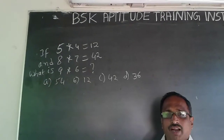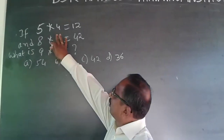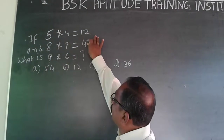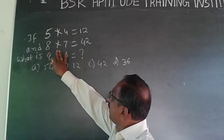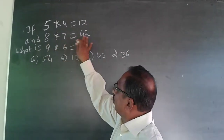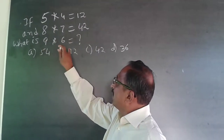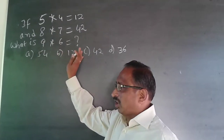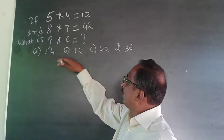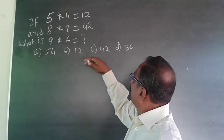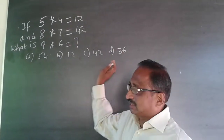The question I am going to handle here is: if 5 into 4 is equal to 12, and 8 into 7 is equal to 42, what is 9 into 6? The options are 54, 12, 42, and 36.